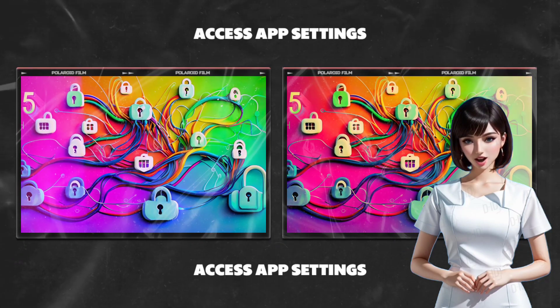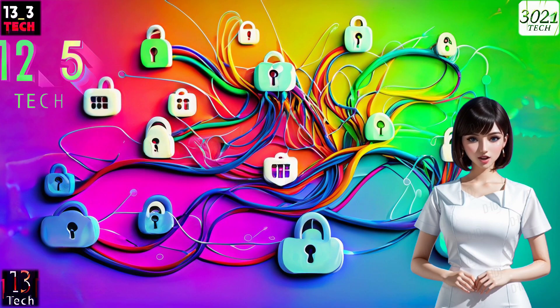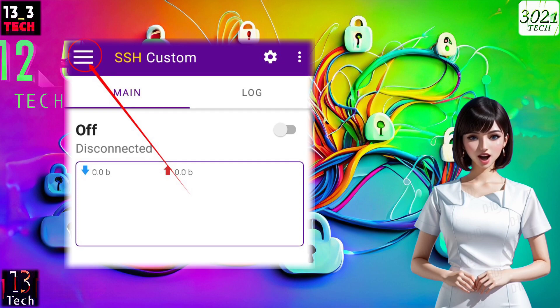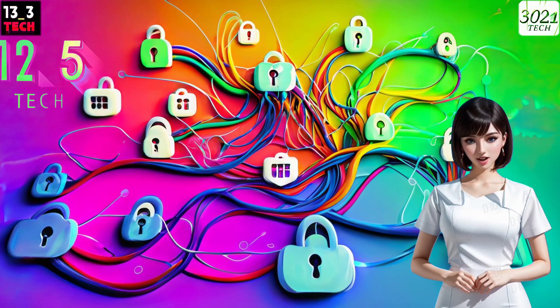Step 3: Access app settings. Now, to fine-tune our VPN, we need to access the app's settings. You can do this by clicking on the hamburger icon at the top-left corner of your screen.